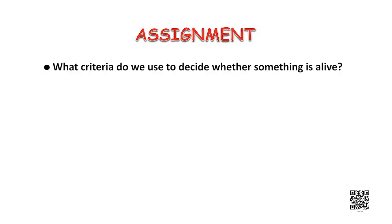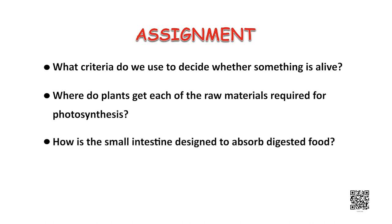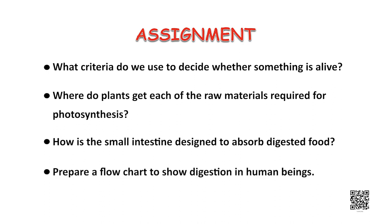Let us now have a quick recap of what we have learnt today. We have understood the term life processes and learnt about the different modes of nutrition in plants and animals along with their examples. We have also learnt in detail how nutrition takes place in human beings. The assignment questions for today's session are: What criteria do we use to decide whether something is alive? Where do plants get each of the raw materials required for photosynthesis? How is the small intestine designed to absorb digested food? Prepare a flow chart to show digestion in human beings.